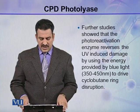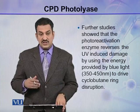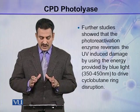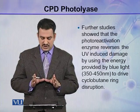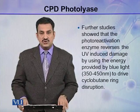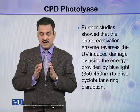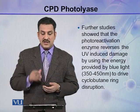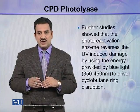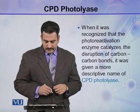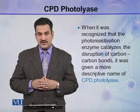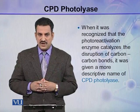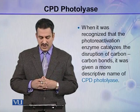Further studies showed that the photoreactivation enzyme reverses the UV-induced damage by using the energy provided by blue light. This blue light ranges in wavelength between 350 to 450 nanometers, and this energy is used to disrupt the cyclobutane ring — a ring formed between two adjacent bases after UV irradiation. During the reversal of this damage, this ring is disrupted. When it was recognized that the photoreactivation enzyme catalyzes the disruption of carbon-carbon bonds, it was given a more descriptive name: cyclobutane pyrimidine dimer photolyase.